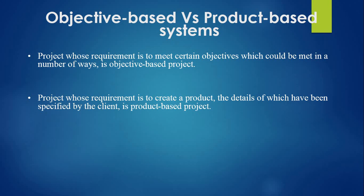Projects may be distinguished by whether their aim is to produce a product or meet certain objectives. A project might be to create a product whose details have been specified by the client — the client has the responsibility for justifying the product. On the other hand, the project requirement might be to meet certain objectives which could be met in a number of ways; an organization might have a problem and ask for a specific recommended solution. Many software projects have two stages: first, an objective-driven project resulting in a recommendation, which might identify the need for a new software system.